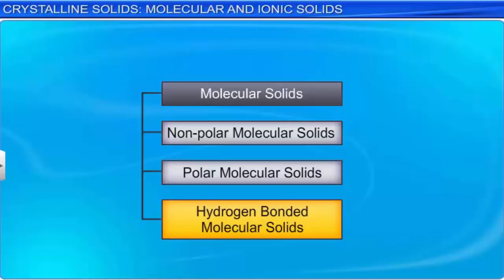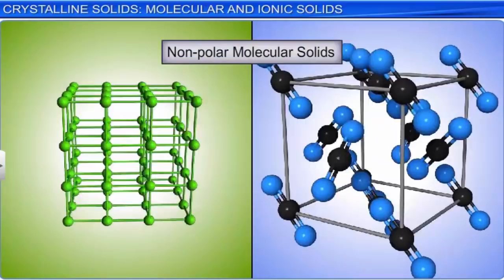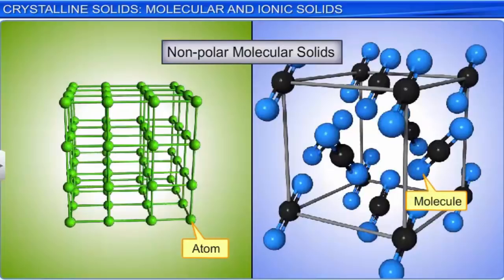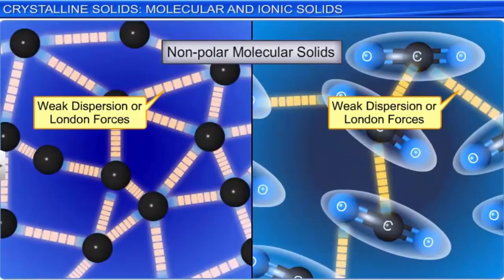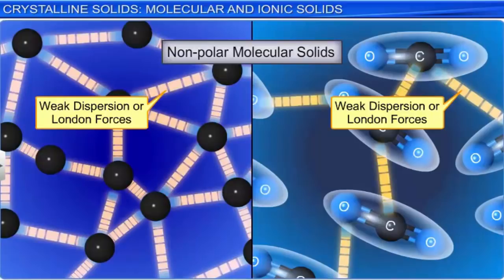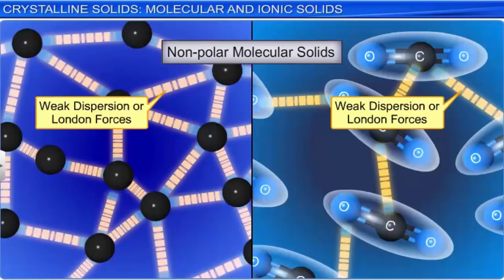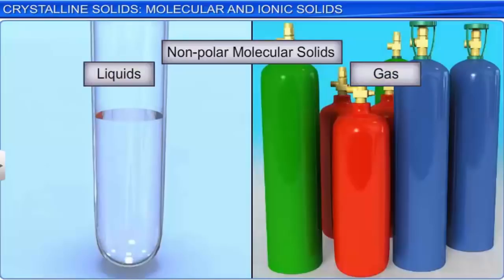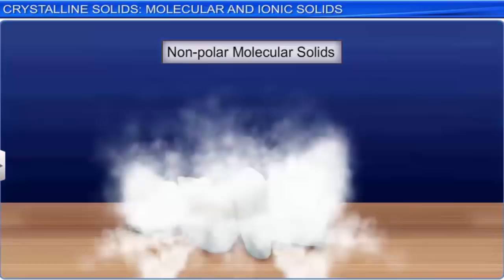In non-polar molecular solids, the constituent particles are either atoms or molecules. The atoms or molecules are held together by weak dispersion or London forces. As a consequence, these molecules have low melting and boiling points. Hence, most of them are liquids or gases at room temperature and normal atmospheric pressure. They are soft, and as the electrons remain localized to particular atoms or bonds, these are non-conductors of electricity.